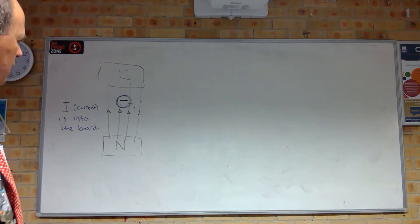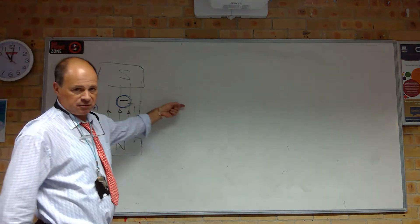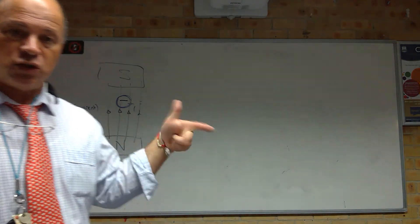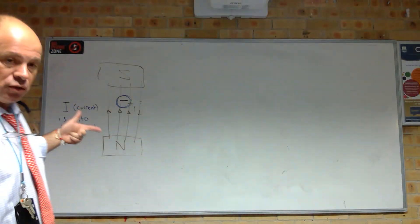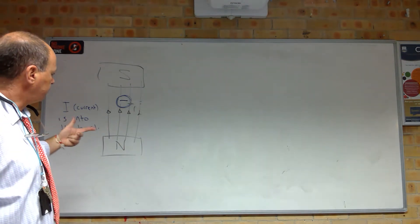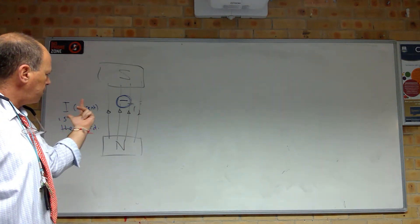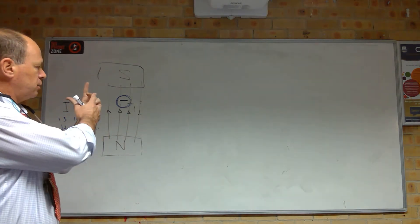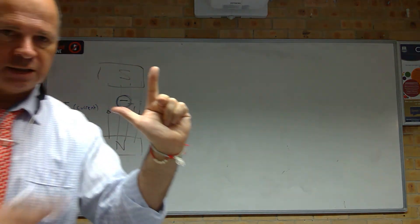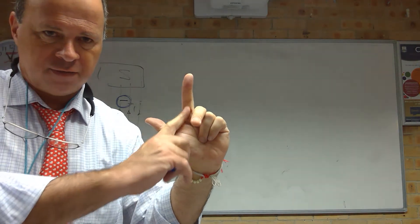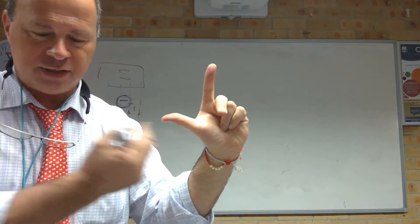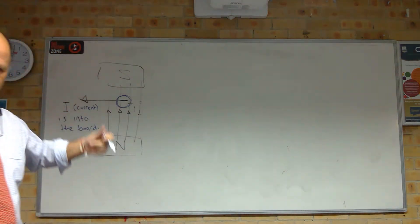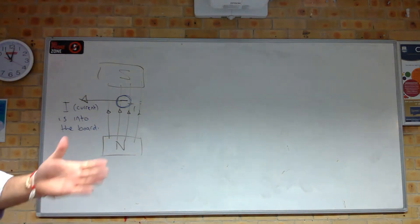It's pretty obvious, isn't it — you would know that if it was going this way for into the board, it'll be going the opposite for out of the board. But we can work it out to make sure this rule actually works. Field going up, and this time the current's coming out of the board — so current's this finger. Current coming out of the board, field going up, force going that way — off to the left, just as expected.